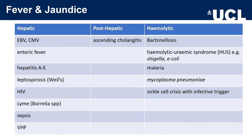Fever and jaundice is a common presentation in acute infectious disease in the returning traveller. Hepatic jaundice can be seen in Epstein-Barr, CMV, enteric fever, hepatitis A to E, Weil's disease, HIV, Lyme disease, sepsis and viral haemorrhagic fevers. Post-hepatic jaundice can be seen in ascending cholangitis. Haemolytic jaundice includes Bartonella, haemolytic uraemic syndrome, malaria, mycoplasma pneumonia and sickle cell crisis.